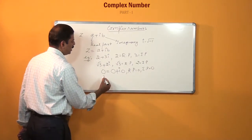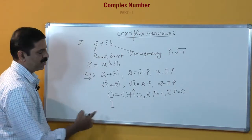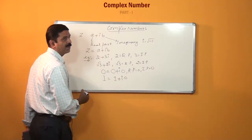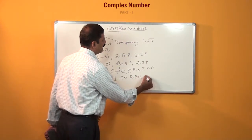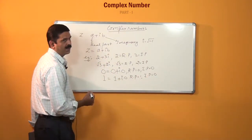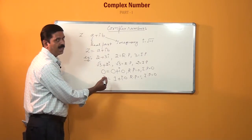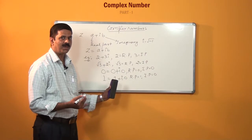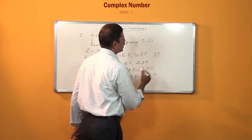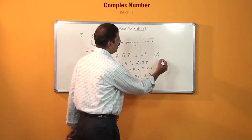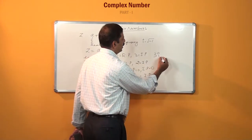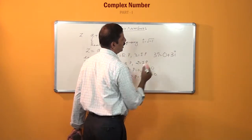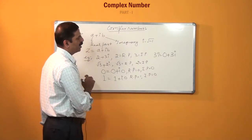Similarly, 1 is a real number as well as a complex number. We can write 1 as 1 plus i times 0, where the real part is 1 and imaginary part is 0. Every real number is a complex number, but a complex number is not necessarily a real number. Note that 3i is a complex number where the real part is 0 and imaginary part is 3.